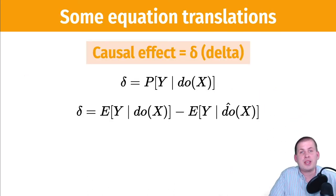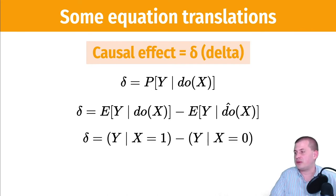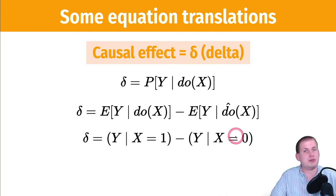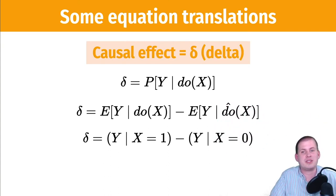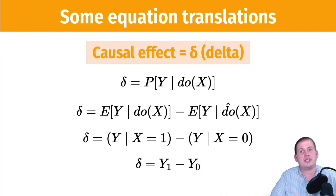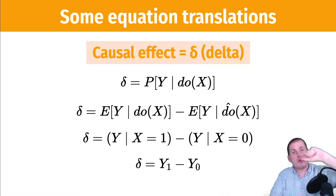In the potential outcomes world, they don't use the do operator, but the idea is the same. They would write: what is the outcome y given that x equals one (the program equals true, you do the program) minus the outcome given that x equals zero (you don't do the program). As a shortcut version, you could write the outcome with subscript one minus the outcome with subscript zero. These all mean the same thing — just different ways of writing that gap between what would have happened and what did happen.